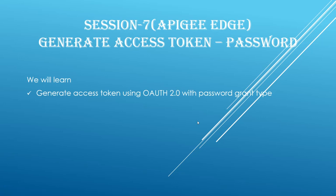Hi, this is session 7 of the Apigee Edge course for beginners. In this video we will learn about generating access tokens based on password grant type. Before we start, please subscribe to our channel and keep learning.